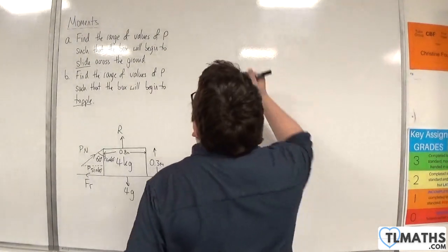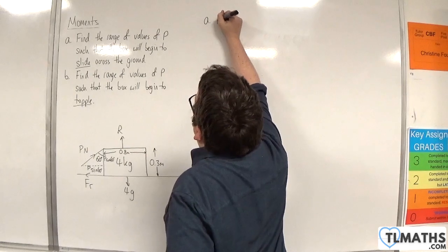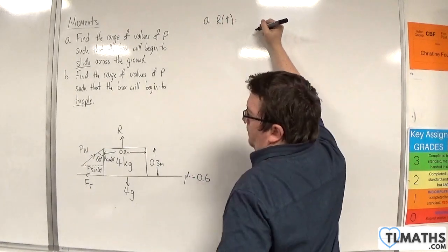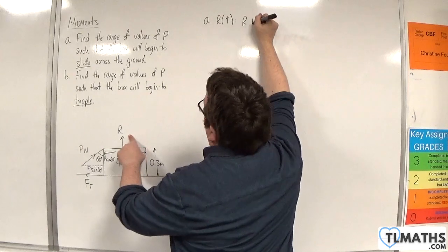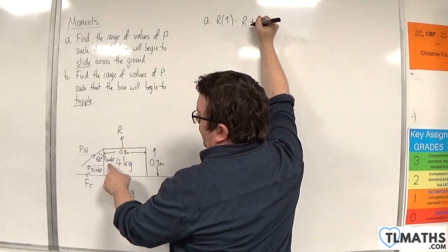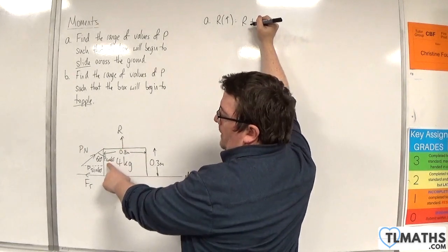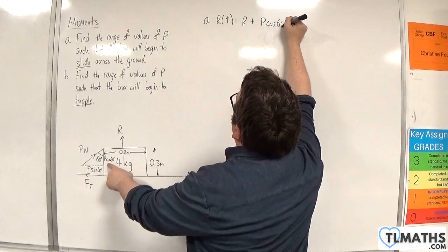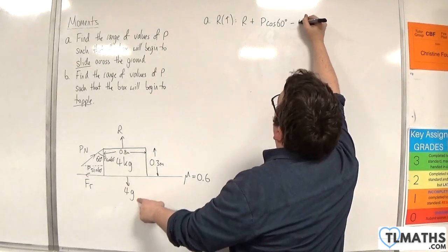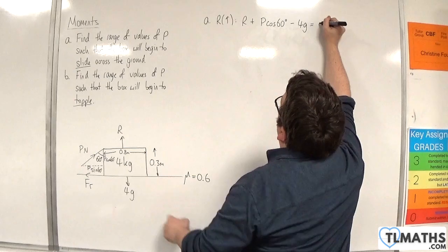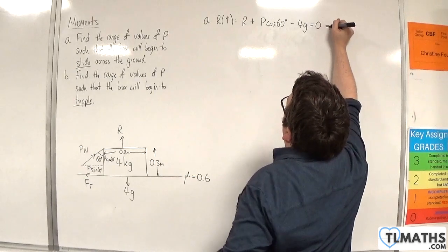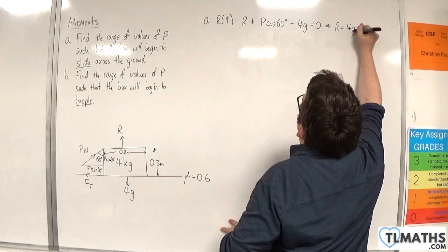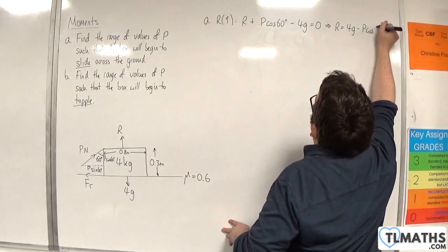For part A, I'm going to resolve vertically, taking upwards as positive. We have R plus the component of the P Newtons force — P cosine 60 — take away the weight, which is 4g, equals 0. So R is going to be equal to 4g take away P cosine 60.